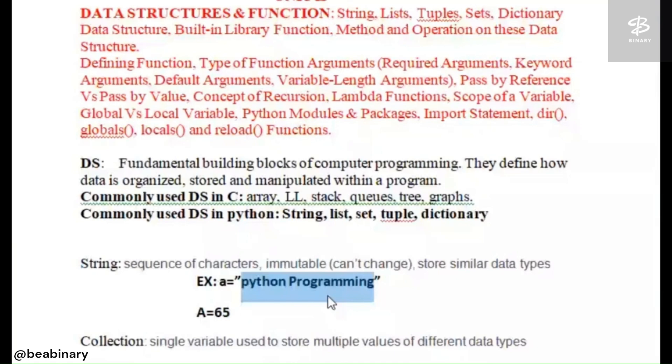For example, vegetables come under a different category, fruits come under a different category. So similar data type is which comes according to similar things.